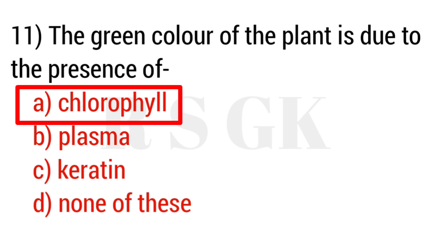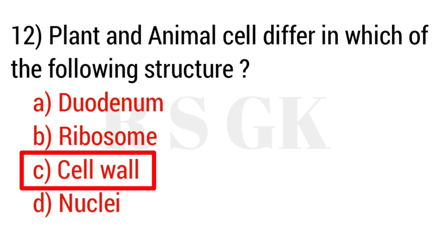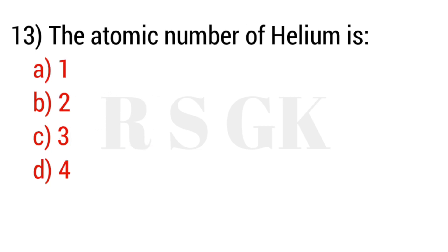The answer is Option D: 23. Question number eleven: The green color of the plant is due to the presence of — the answer is Option A: chlorophyll. Question number twelve: Plant and animal cells differ in the use of which structure? The answer is Option C: cell wall. Question number thirteen: The atomic number of helium is — the answer is Option B: 2.